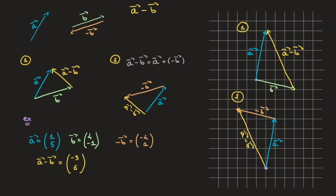Once more, to get from the tail of this yellow vector to its head, we move three units to the left and six units upward, confirming the result (-3, 6). And there we have it — that's how to subtract one vector from another graphically. That's it for this tutorial.